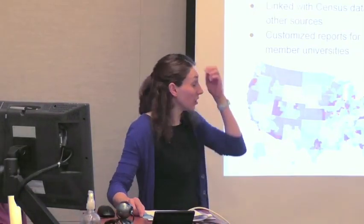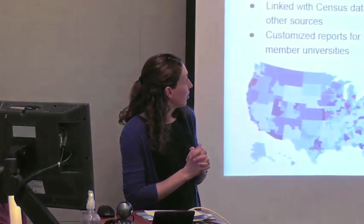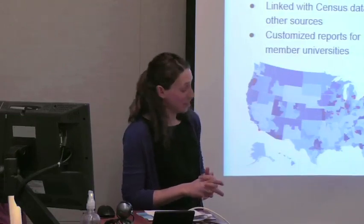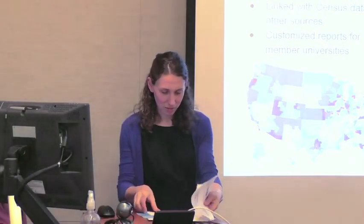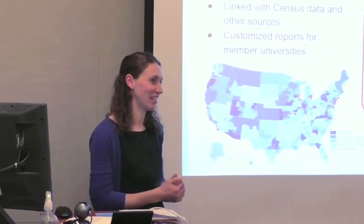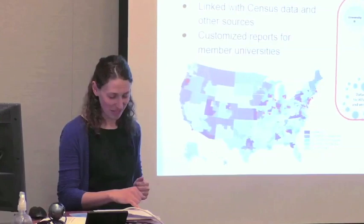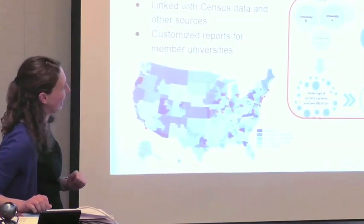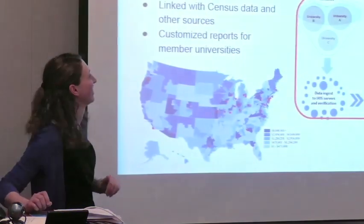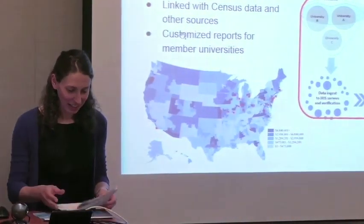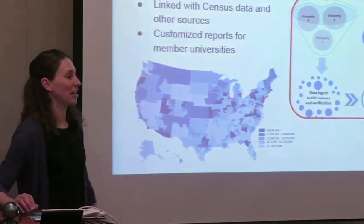I'm going to go over what we mean by the IRIS U-Metrics dataset. U-Metrics is an acronym that stands for Universities Measuring the Effects of Research on Innovation, Competitiveness, and Science — something I had to write down to be able to say. We usually just say U-Metrics, but I wanted to tell you what we're actually talking about. It's the name of our dataset.